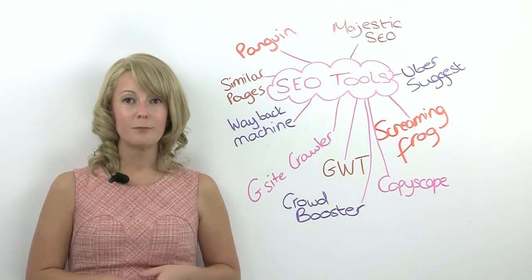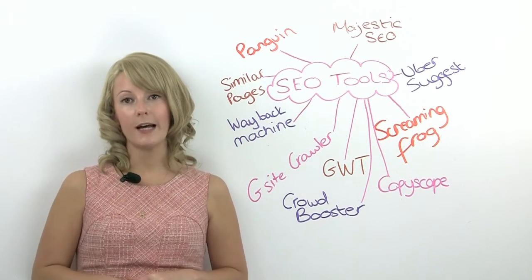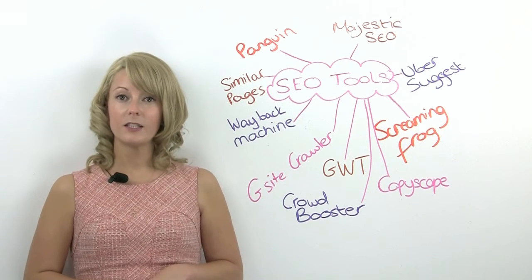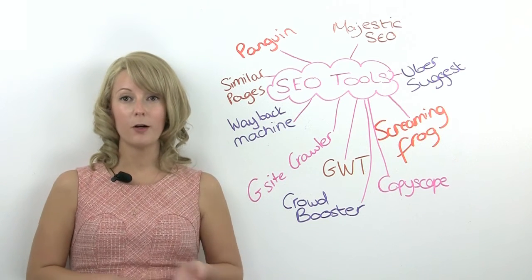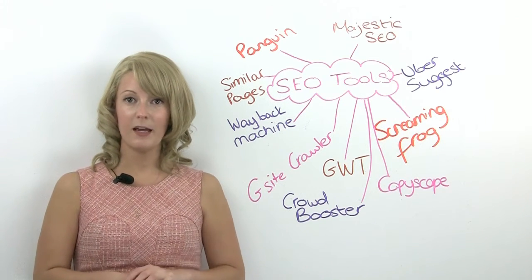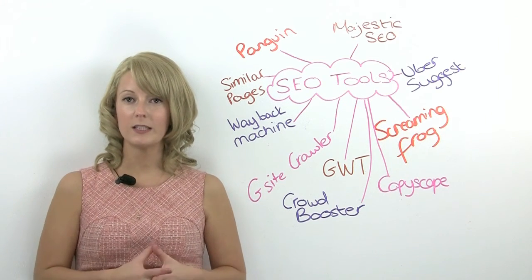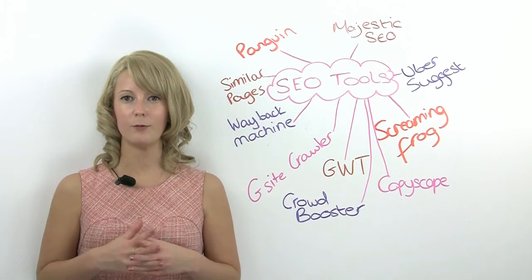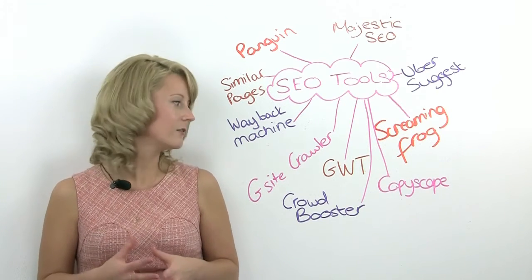G-site Crawler is a brilliant tool for XML sitemaps. It's nice because you can set priorities for the pages and frequencies, and it also formats it nicely with a good XSS file.